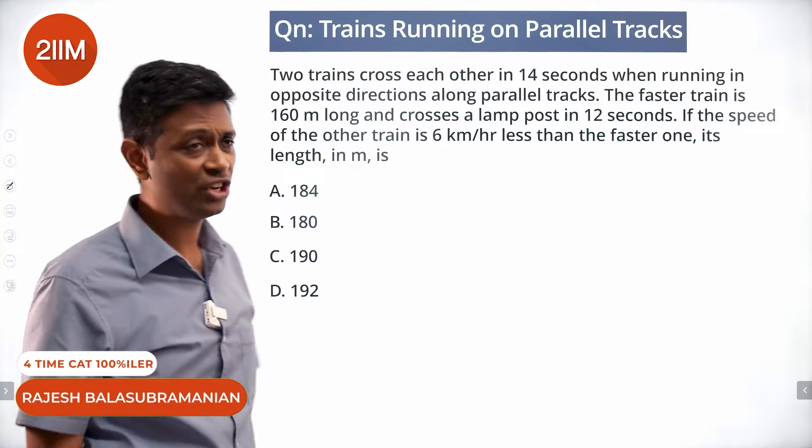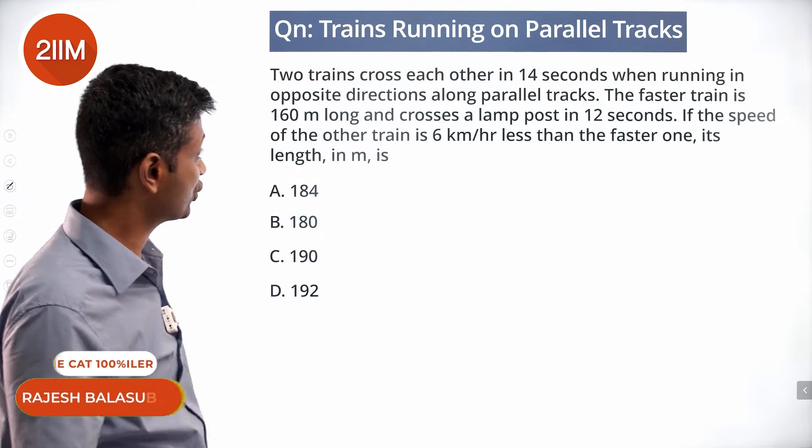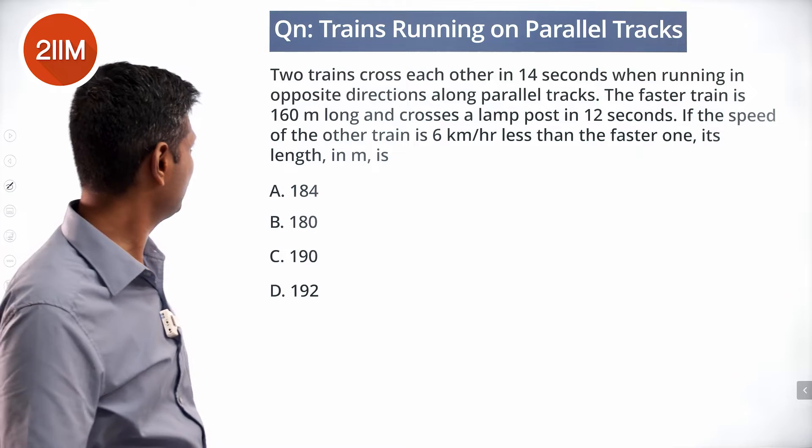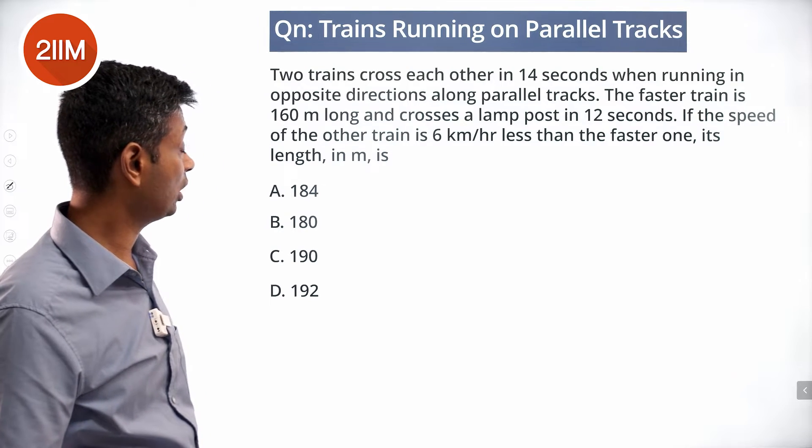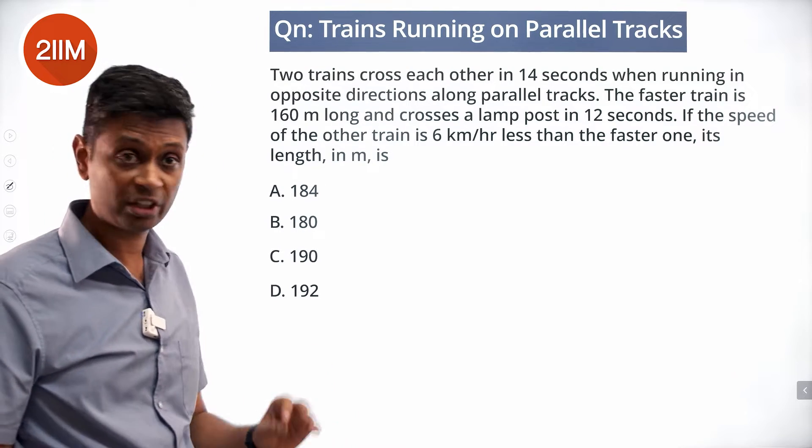Two trains cross each other in 14 seconds when running in opposite directions on parallel tracks. The faster train is 160 meters long and crosses a lamppost in 12 seconds.